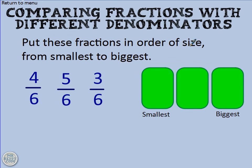Put these fractions in order of size from smallest to biggest: four sixths, five sixths, and three sixths. That's probably very straightforward, but if it seems like a bit of a mystery, let me use a diagram to help you understand what's happening.